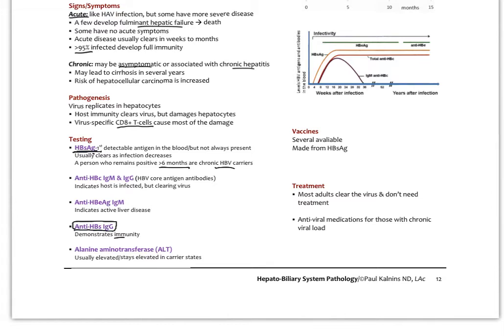There are anti-HB core antigens, IgM and IgG. This indicates an active infection and that you're clearing the infection. HBE antigen IgM indicates active liver disease. Surface antigen IgG indicates immunity. We look at our liver enzymes as well. We usually do a liver function test together with the viral panels to see where a person's at in their healing process.